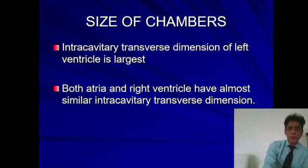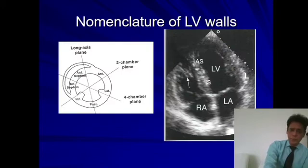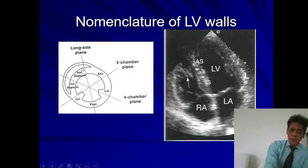Out of all four chambers, the left ventricle is the largest in transverse dimension. The two atria and the right ventricle have almost the same transverse dimension. This picture shows the two-chamber parasternal short axis view at the level of the two ventricles, depicting the right ventricle, the left ventricle, and the interventricular septum.